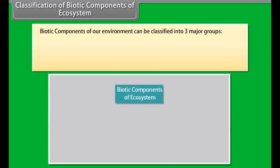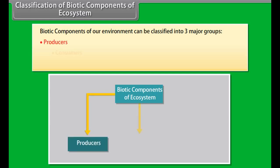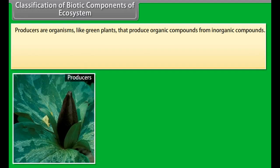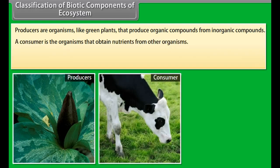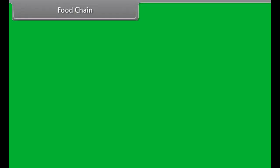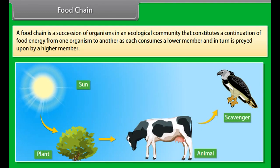Classification of biotic components of ecosystem. Biotic components of our environment can be classified into three major groups: producers, consumers, and decomposers. Producers are organisms like green plants that produce organic compounds from inorganic compounds. A consumer is an organism that obtains nutrients from other organisms. Decomposers are microorganisms which decompose dead plants and animals, breaking down complex organic substances into simple inorganic substances in the soil, which are again used by plants.